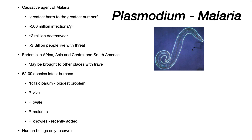Malaria is caused by a set of protozoans from the Plasmodium genus. Only 5 of 100 species infect humans. They are P. falciparum, which is the biggest problem, P. vivax, P. ovale, P. malariae, and P. knowlesi, which was recently added.